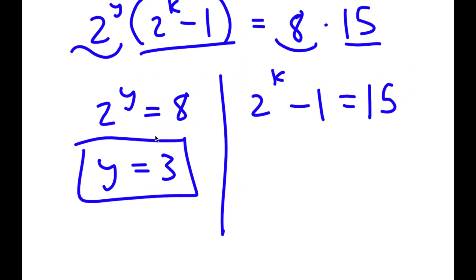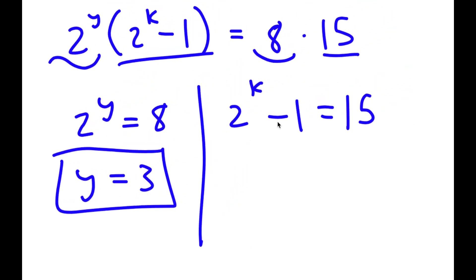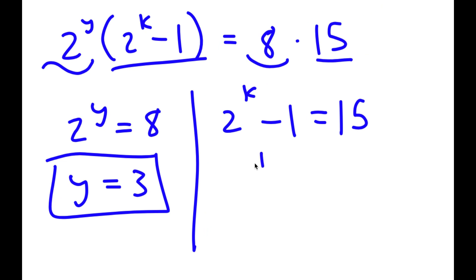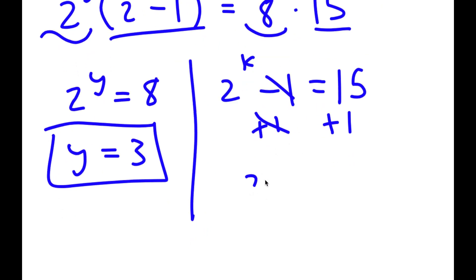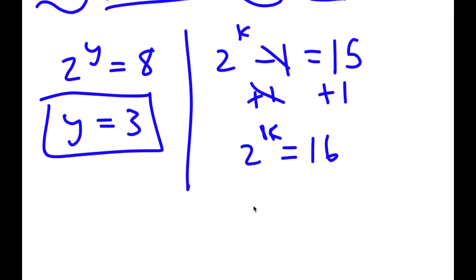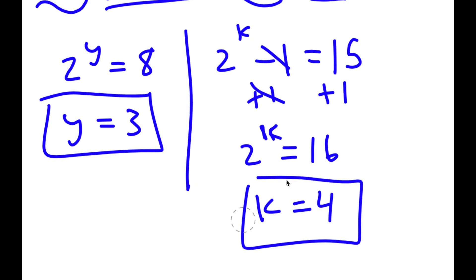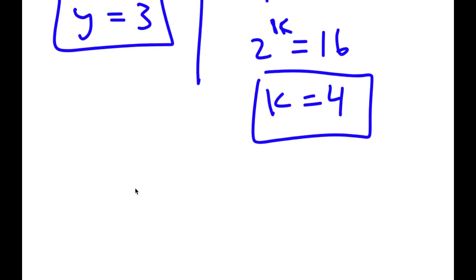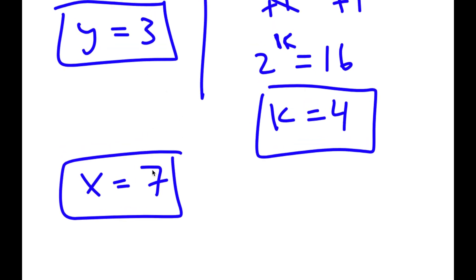For 2 to the power of k minus 1 equals 15, adding 1 on both sides gives 2 to the power of k equals 16, meaning k equals 4. Since x equals k plus y, x equals 4 plus 3, which is 7. So x equals 7 and y equals 3 are the solutions.